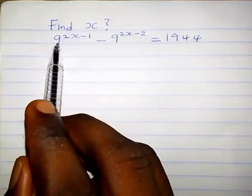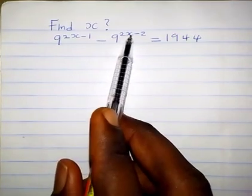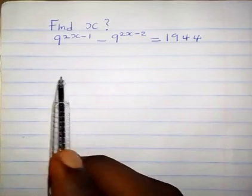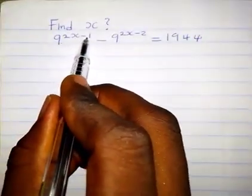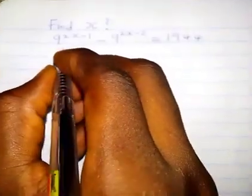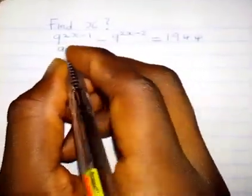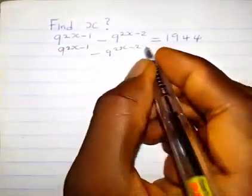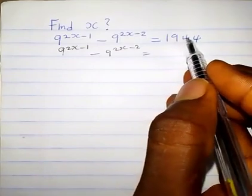Find s if 9^(2s-1) minus 9^(2s-2) equals 1944. Let's take a look at this question together and solve it. Solution: we have 9^(2s-1), we write it as 9^(2s-1). Nothing changes, so 9^(2s-2) equals... but 1944 can be written as 81 times 24.